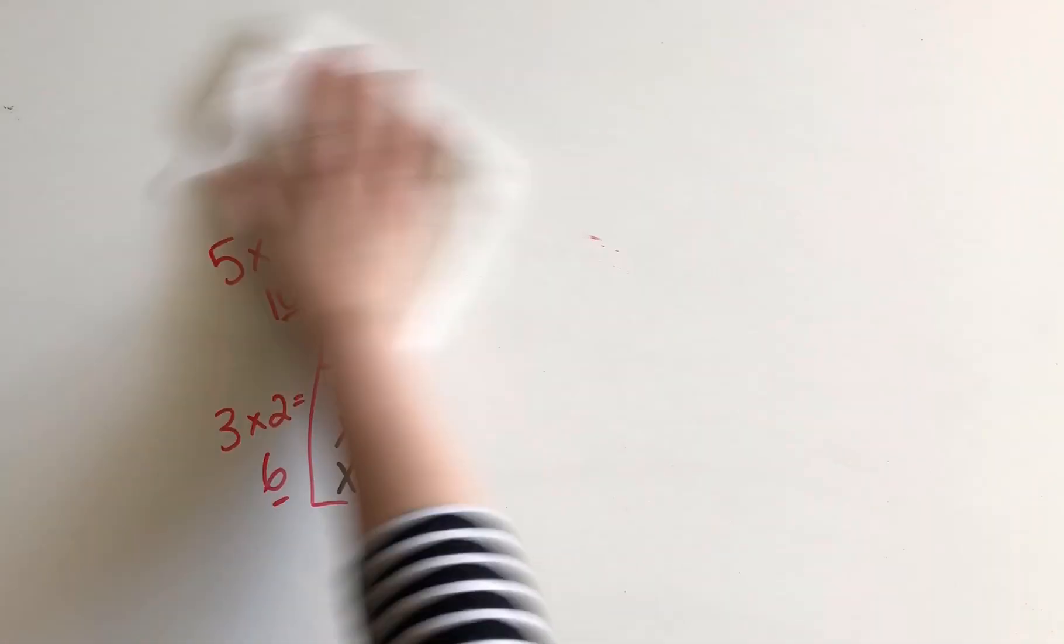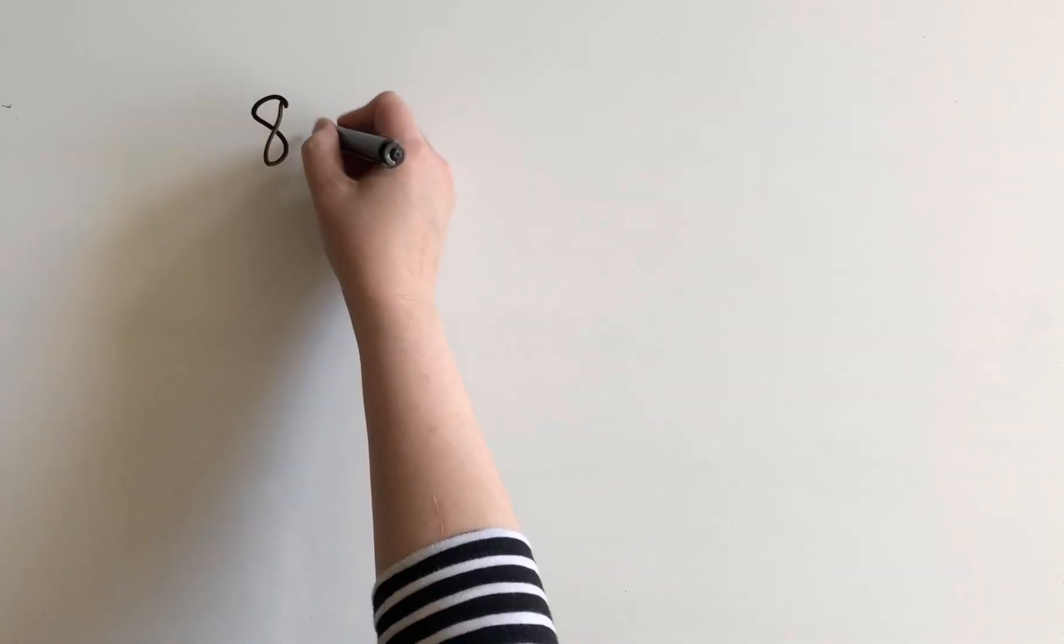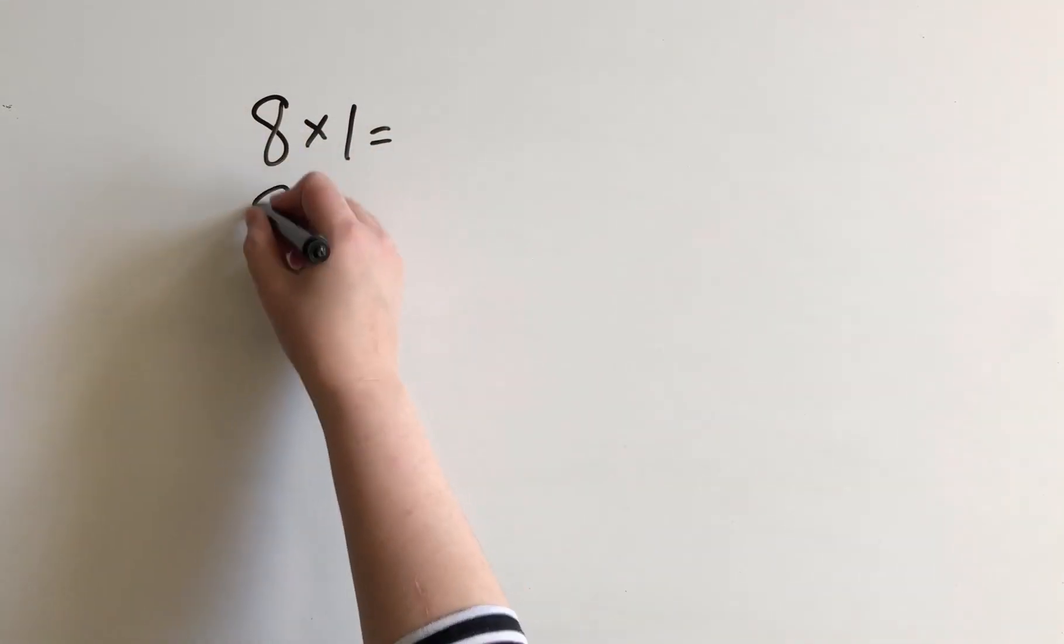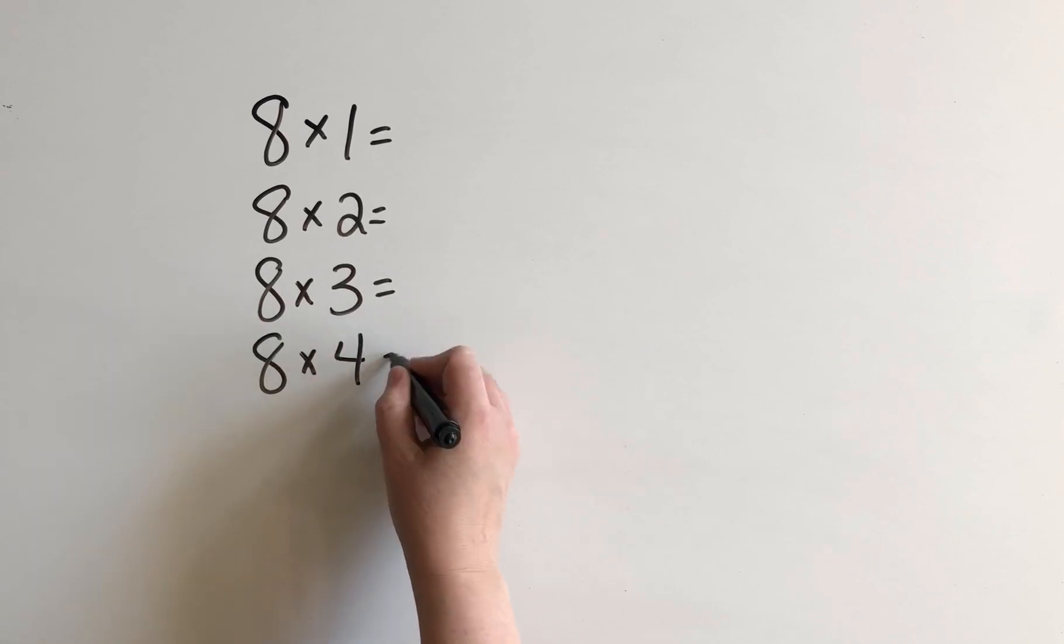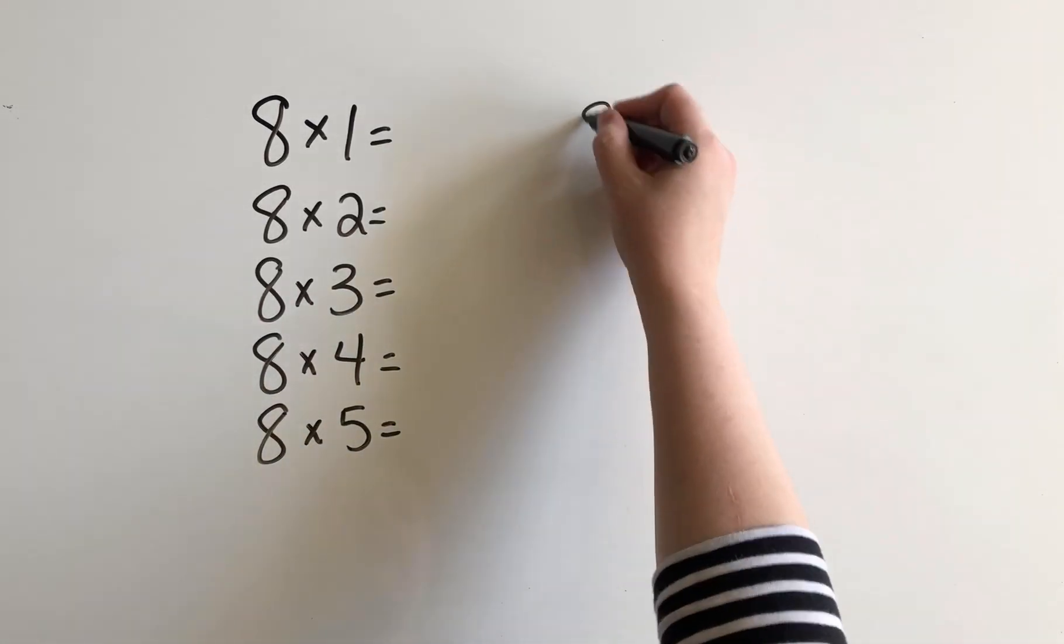So when you are stumped on a fact, I want you to think about all the different connections that you can make to things that you already know. So let's go through the 8's facts from 1 to 10. And I'm going to tell you a strategy for each one that I might use. But your strategy might be different, and that is absolutely okay.